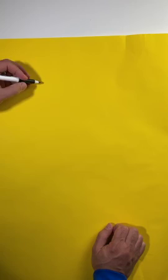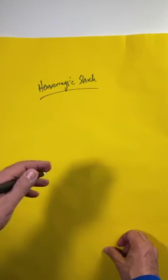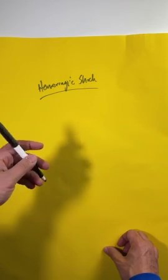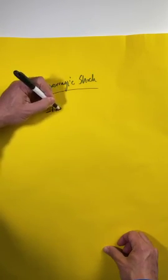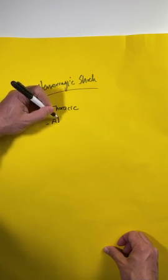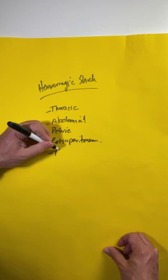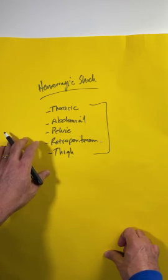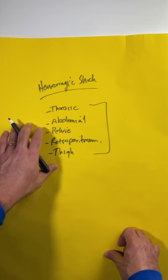Now unless someone has a knife sticking out of them, hemorrhagic shock is not always so obvious. So think about places where a person can lose a significant amount of blood causing hemorrhagic shock. The cavities in the body are the thoracic cavity, the abdominal cavity, the pelvic cavity, the retroperitoneum, and the thigh. These are all places where a person can lose a significant amount of blood and go into hemorrhagic shock and die.